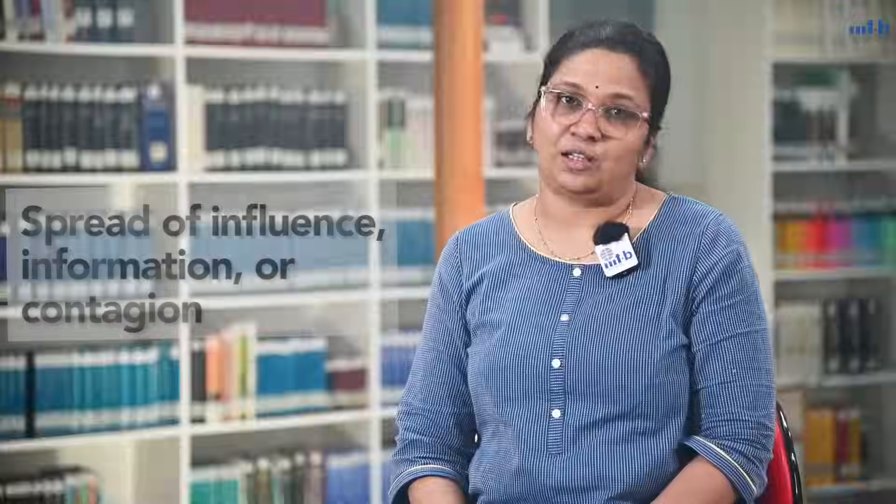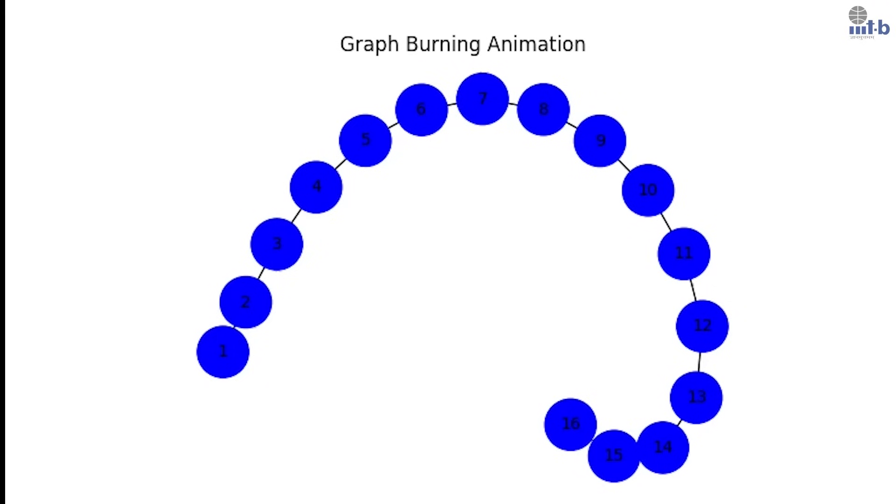Graph burning is a discrete time process that models the spread of influence, information, or contagion through a graph. In this process, vertices are burned one at a time, where any unburned vertices that are neighbors to burned vertices from the previous round also catch fire. This mimics how information or contagions propagate in real networks. The minimum number of rounds required to burn a graph is referred to as its burning number; a lower burning number indicates a faster spread.